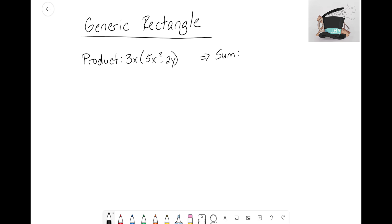Let's take a look. I'm going to build out my generic rectangle—it's always our first step. We want to start moving these terms onto the sides of our generic rectangle.